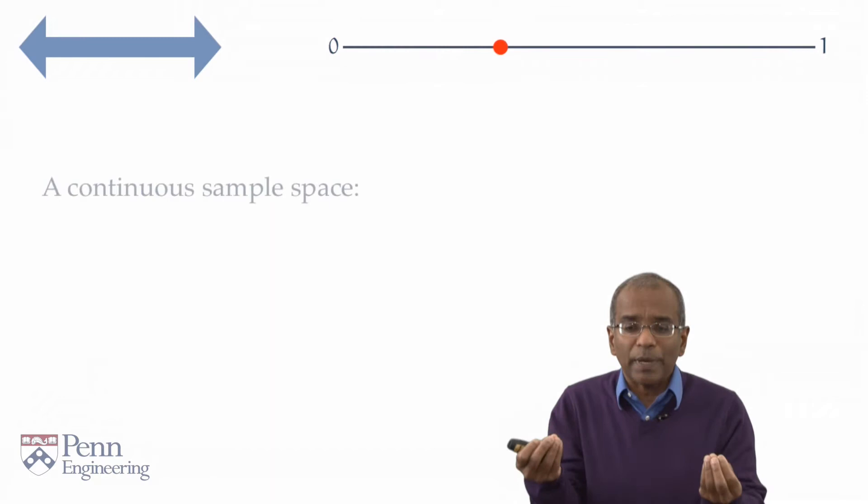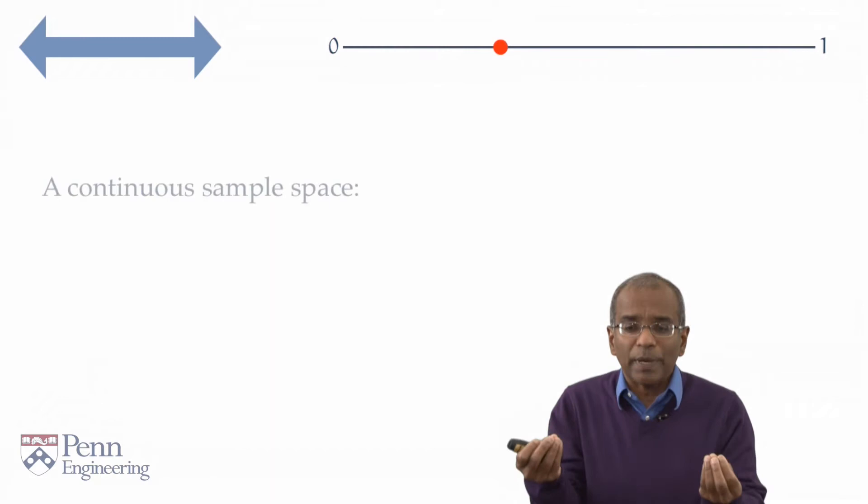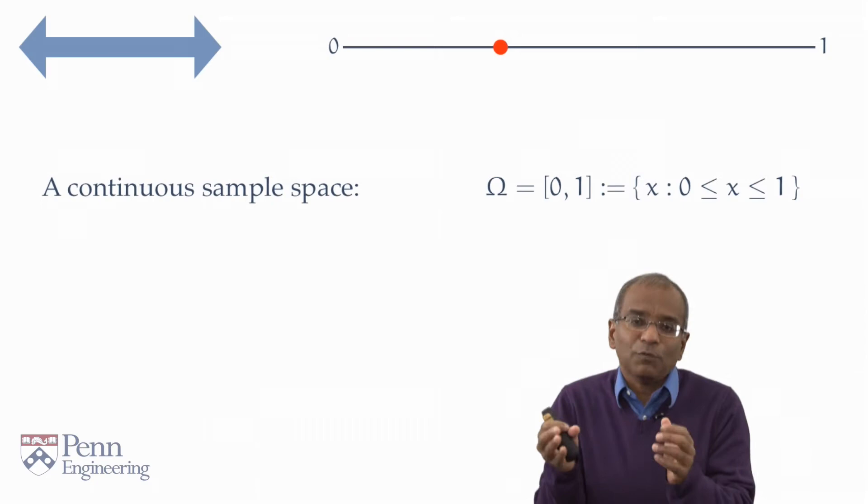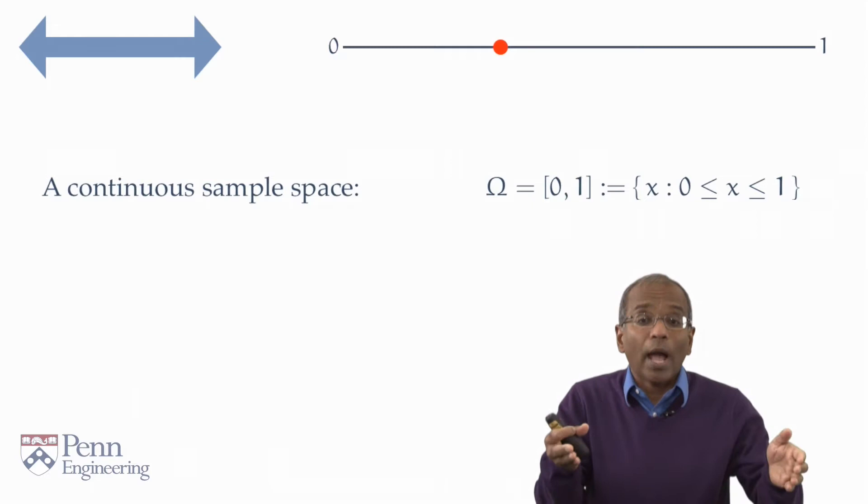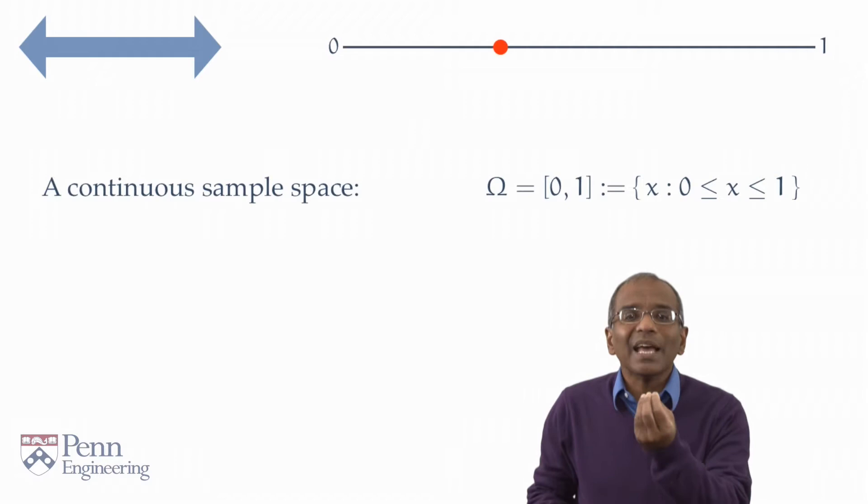The sample space now is a continuous space. Omega is the unit interval. And formally we will write this as a set of real numbers x, where x ranges between 0 and 1. The sample points here are numbers x between 0 and 1.